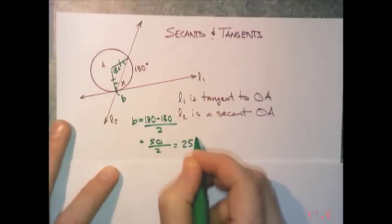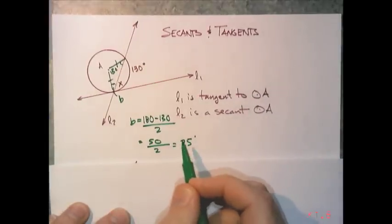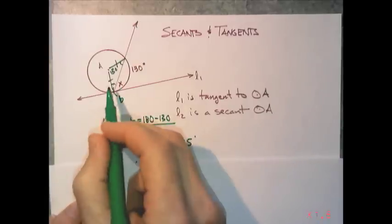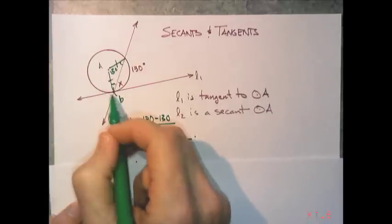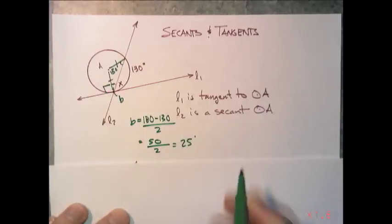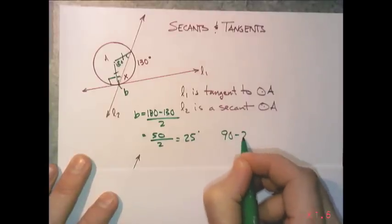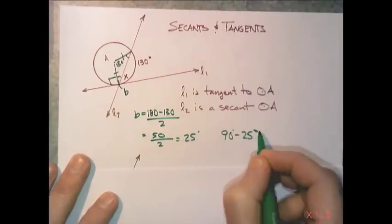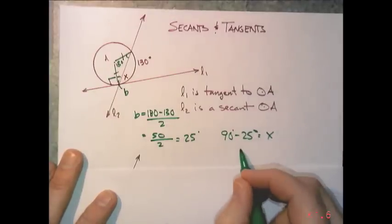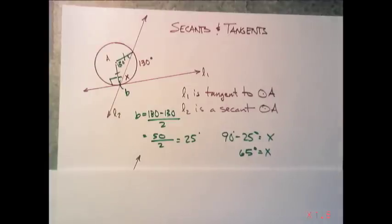Now to find X, we use the fact that l1 is tangent to circle A, which means this is a right angle. So I'm going to take 90 degrees minus the 25 degrees giving me my X, which will be 65. Fantastic.